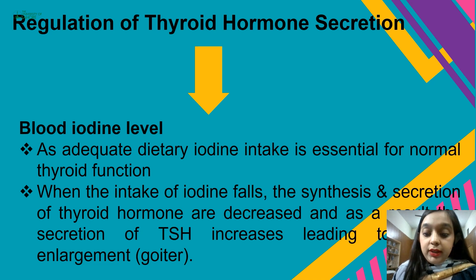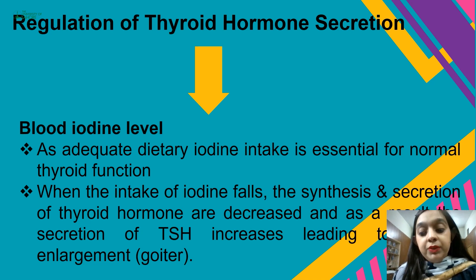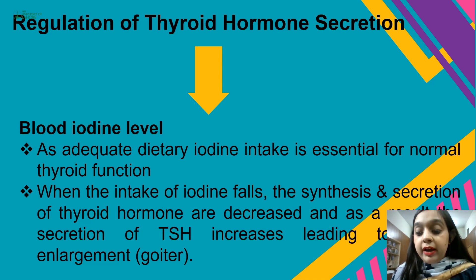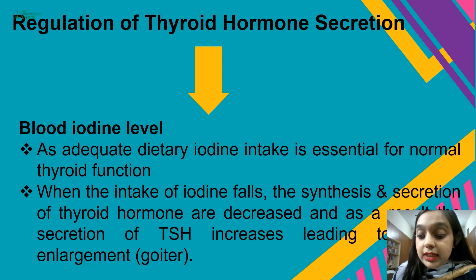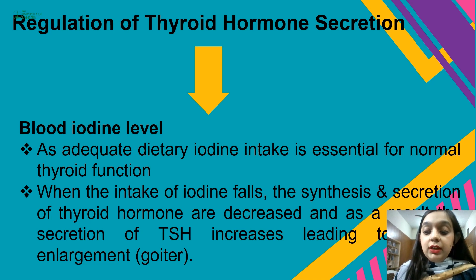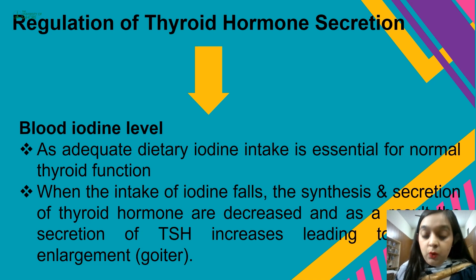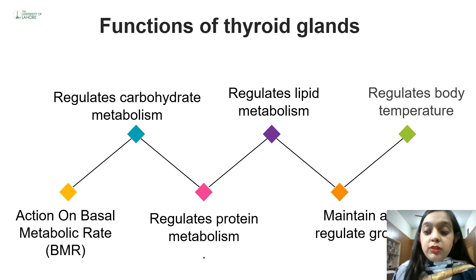When iodine intake falls, the synthesis and secretion of thyroid hormones T3 and T4 reduce, resulting in a continuation of the positive feedback mechanism and increased TSH production. This increased TSH leads to enlargement of the thyroid gland, a condition known as goiter. Goiter is a disease condition caused by iodine deficiency in the body.